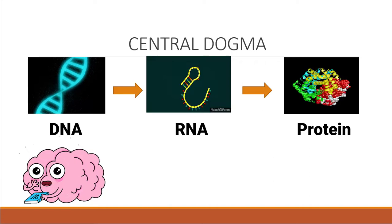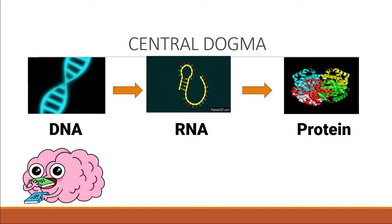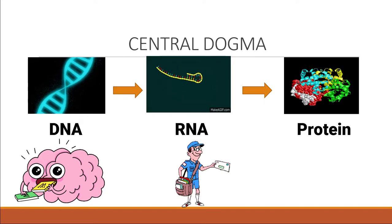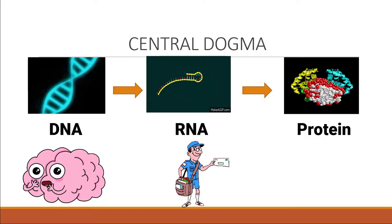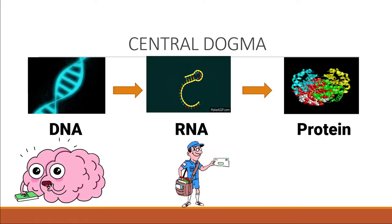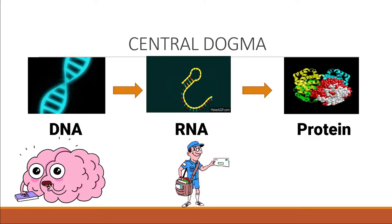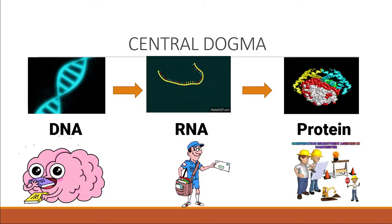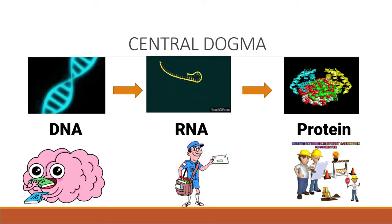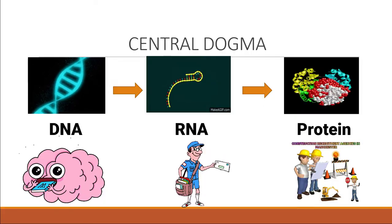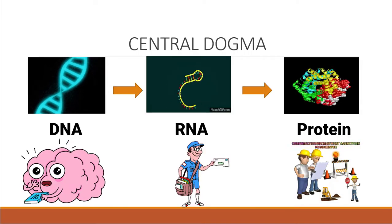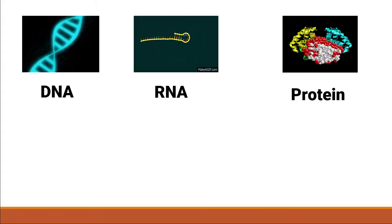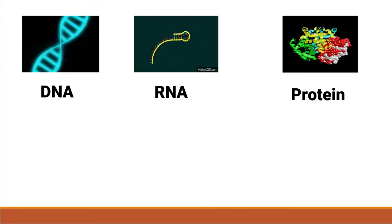DNA acts like a brain that gives signals to the body, while RNA acts like a postman taking the message from the brain and delivering it to the translation machinery to make a specific protein or enzyme. This whole process is called the central dogma.